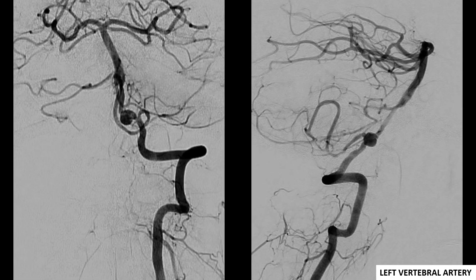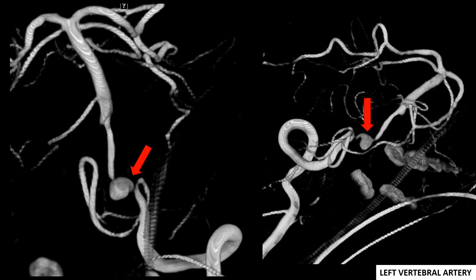Diagnostic angiography was then undertaken. Left vertebral artery injection demonstrated a dissecting pseudoaneurysm of the intracranial left vertebral artery immediately distal to the origin of the left PICA. 3D reconstructions demonstrated significant inflow and outflow stenosis.